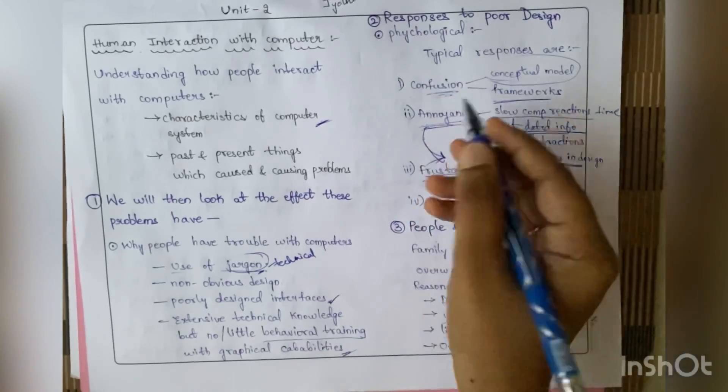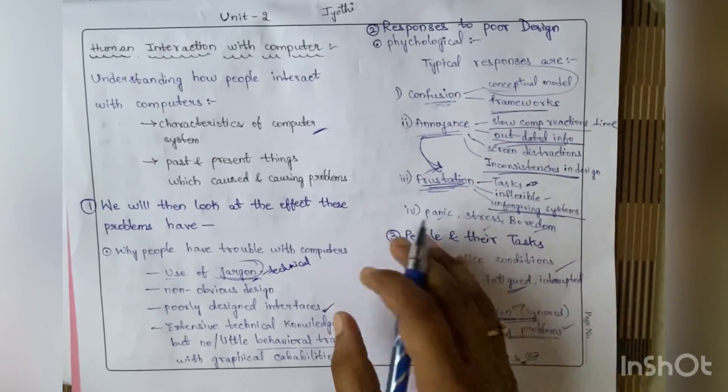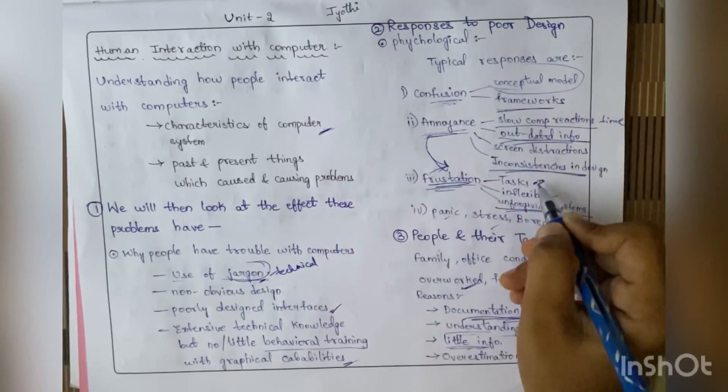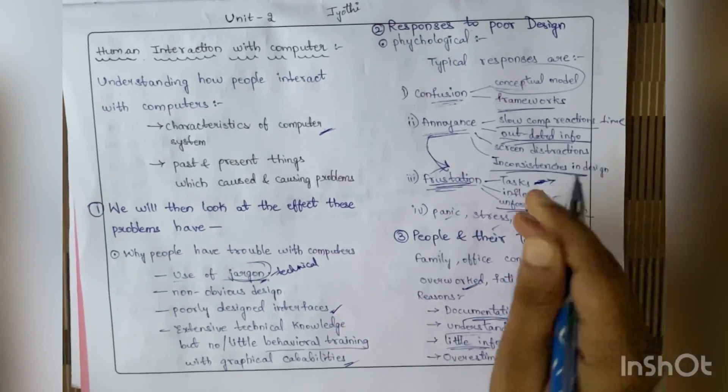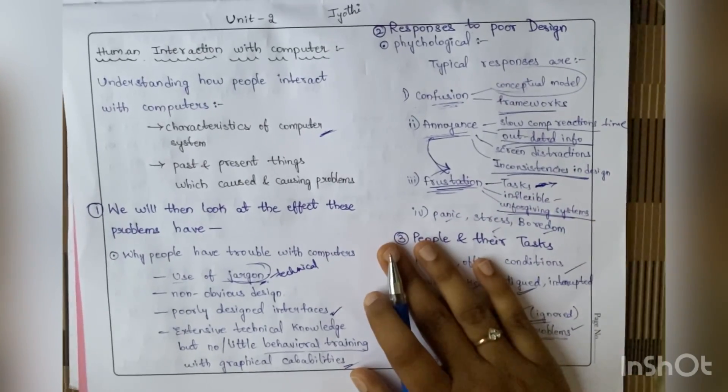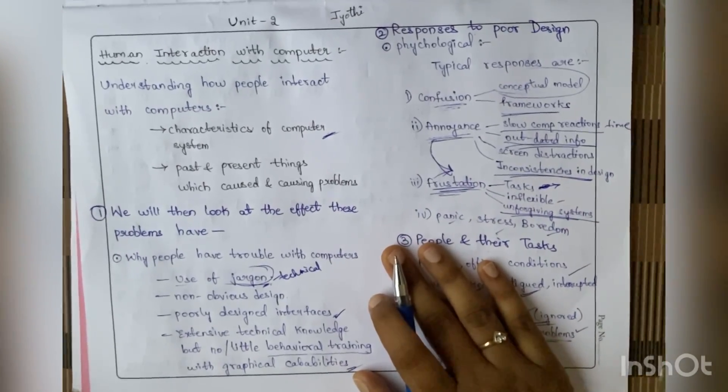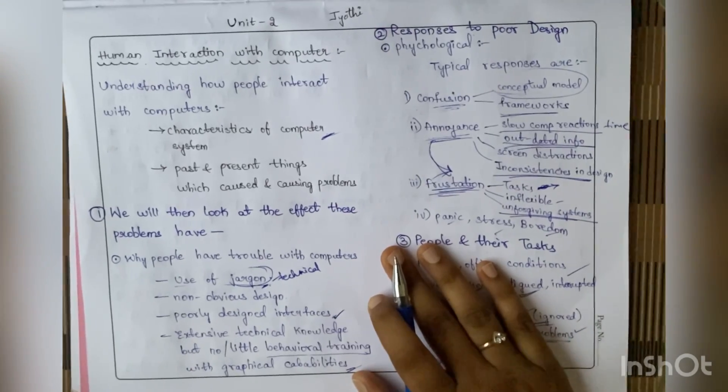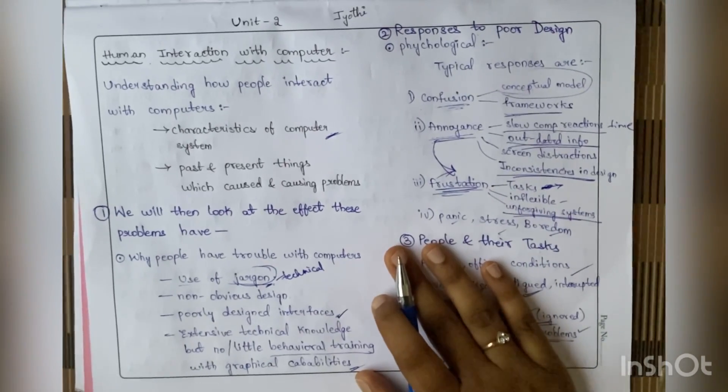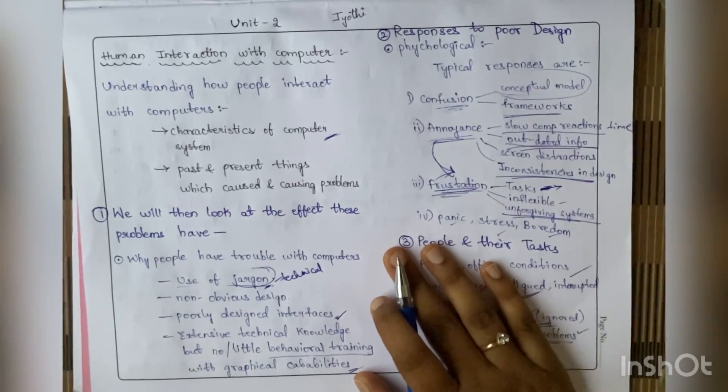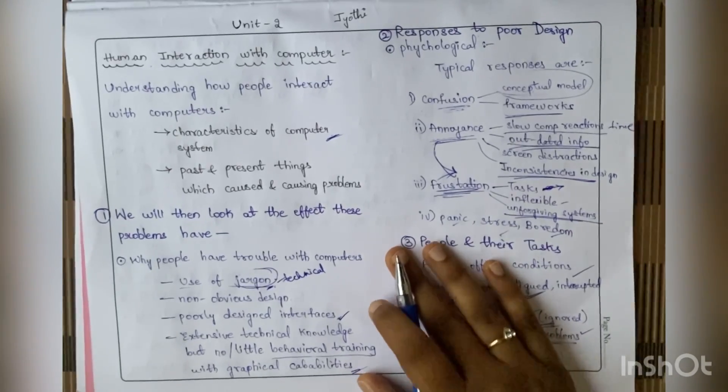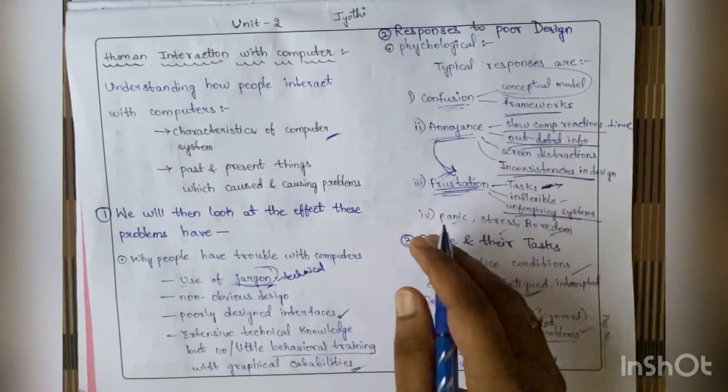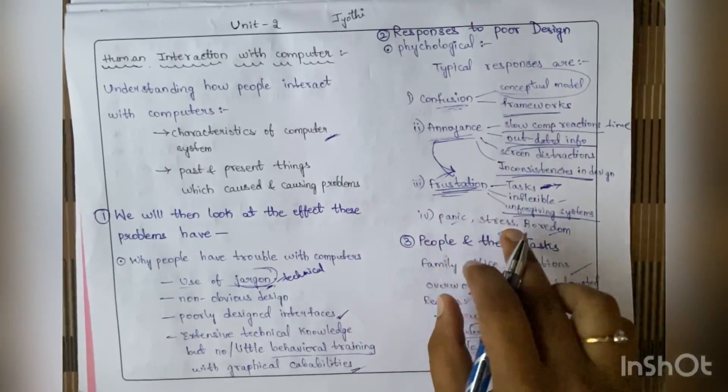When this annoyance becomes more and more, you get frustrated. You cannot complete your task in time - you need to complete all your tasks by deadline, but because of frustration you may not do it. This is because of inflexible features and unforgiving systems that give unexpected or unpredictable results. With all this, people also feel panicked, stressed, and bored because of poor design.